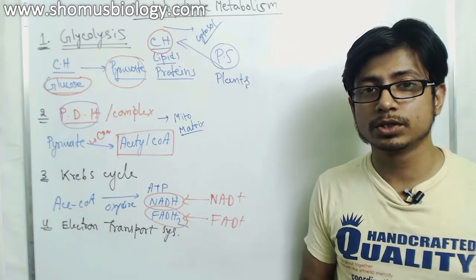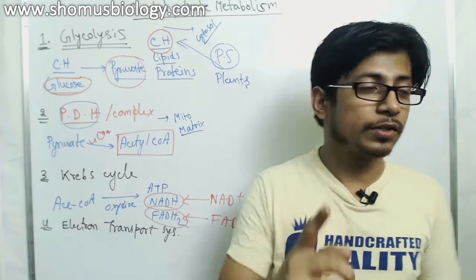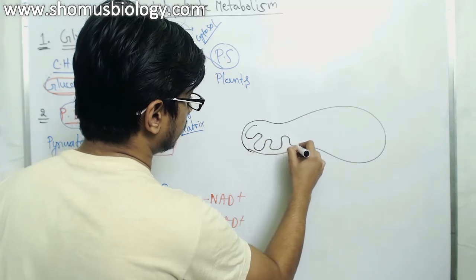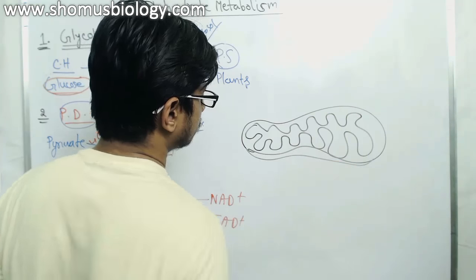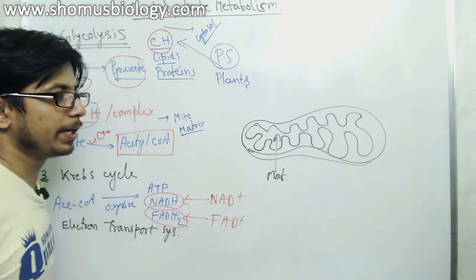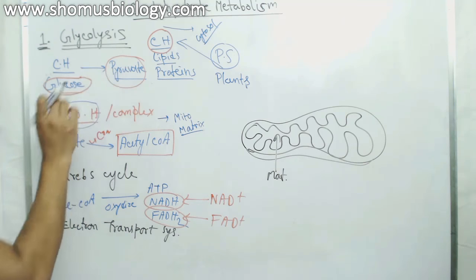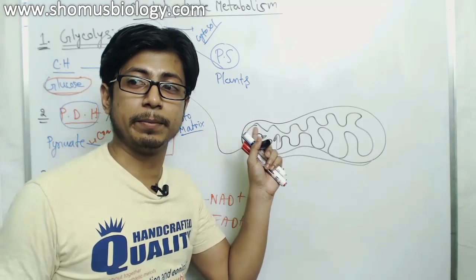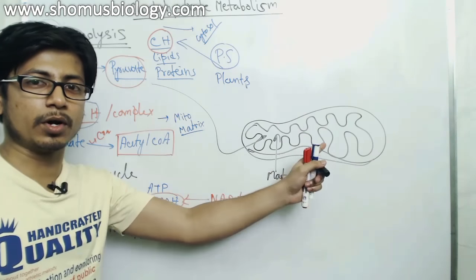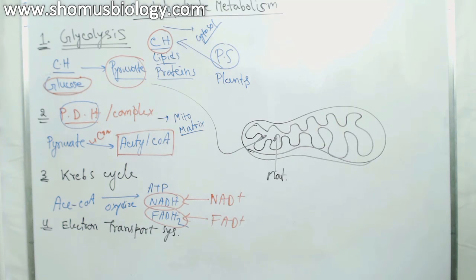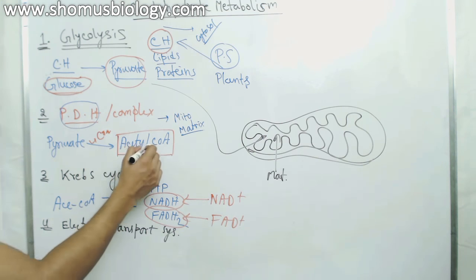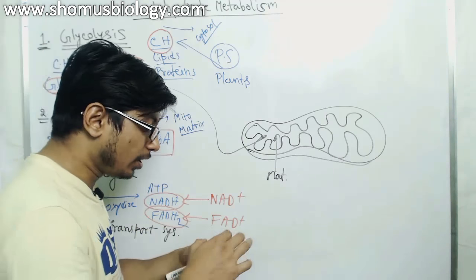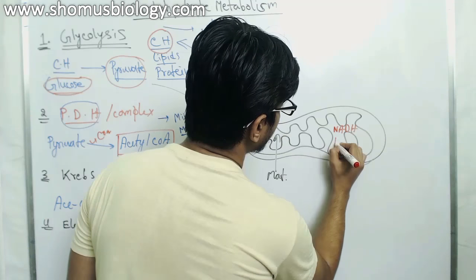The Krebs cycle always works inside the matrix of mitochondria. Once pyruvate is produced after glycolysis, it is transported into the mitochondrial matrix via transporter proteins on the mitochondrial membrane. Inside the matrix, pyruvate is converted into acetyl-CoA, which then enters the Krebs cycle through multiple stages.